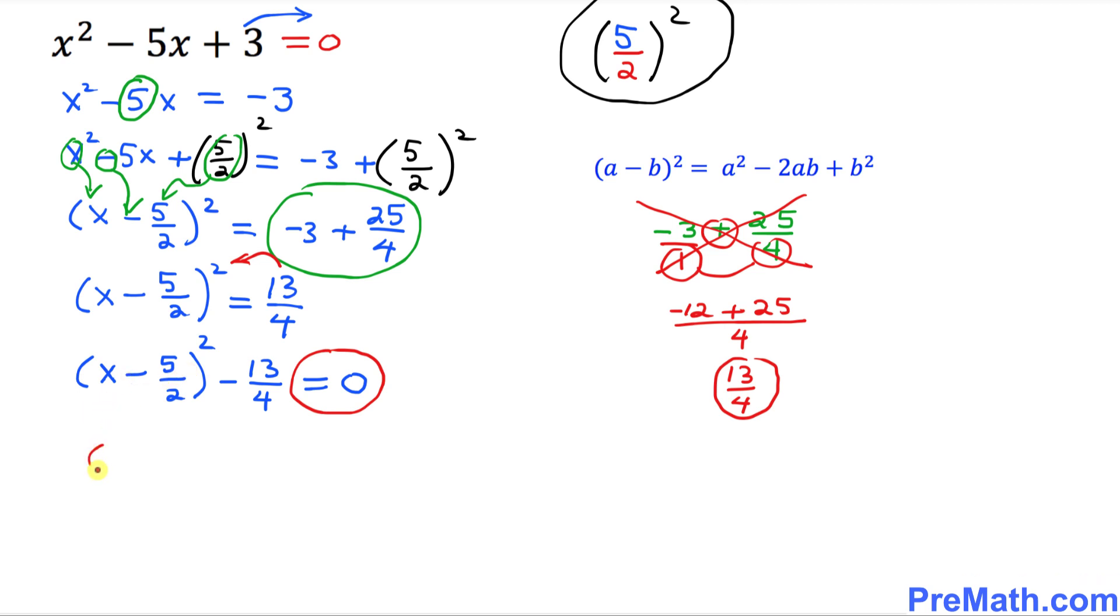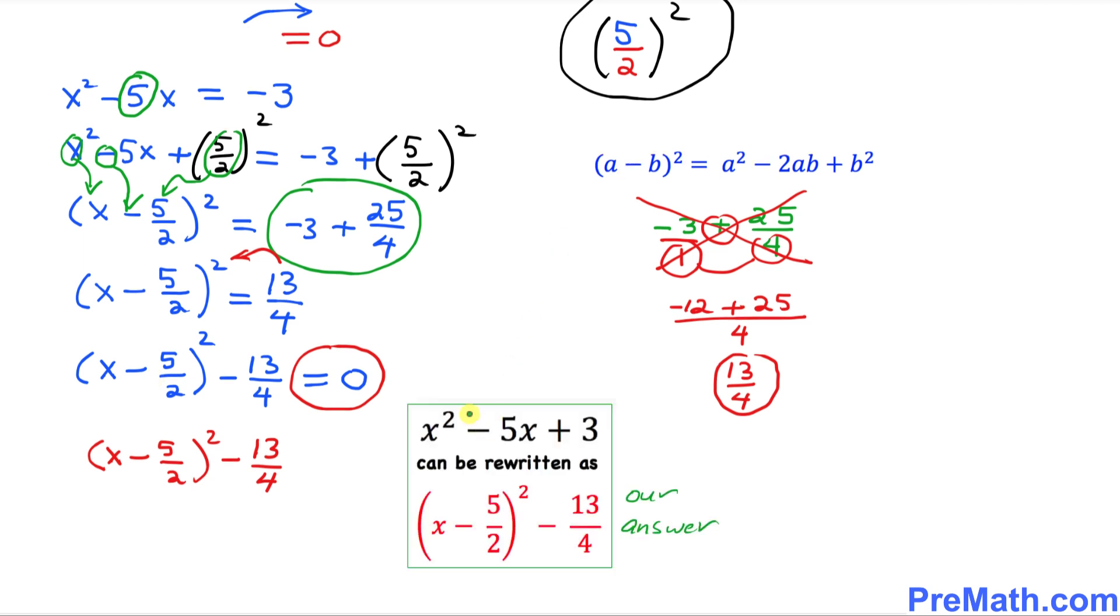I'm going to write down x minus 5 over 2 minus 13 over 4. And this represents a perfect square. And thus, this is our answer.